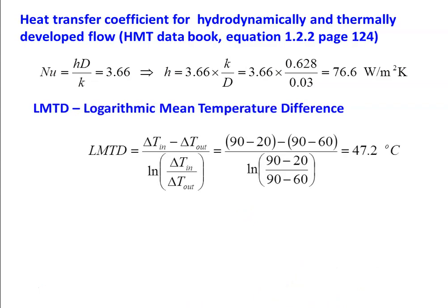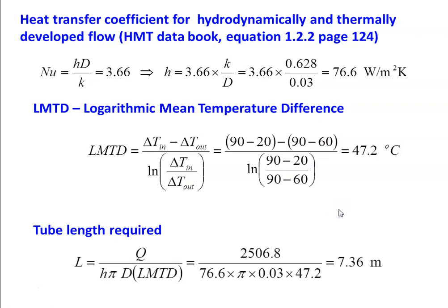LMTD = (ΔTin − ΔTout) / ln(ΔTin/ΔTout). Wall temperature is 90°C; inlet fluid temperature is 20°C and outlet is 60°C. So ΔTin = 90 − 20 and ΔTout = 90 − 60. Substituting, LMTD = 47.2°C. Tube length required: L = Q / (h × π × D × LMTD) = 2506.8 / (76.6 × π × 0.03 × 47.2) = 7.36 m.